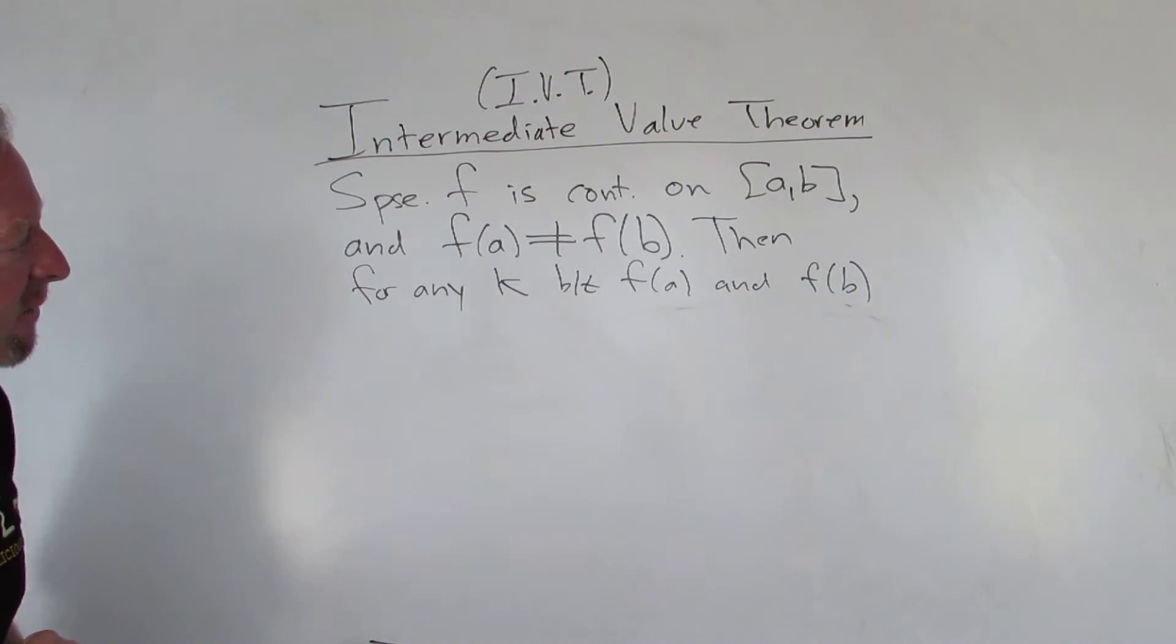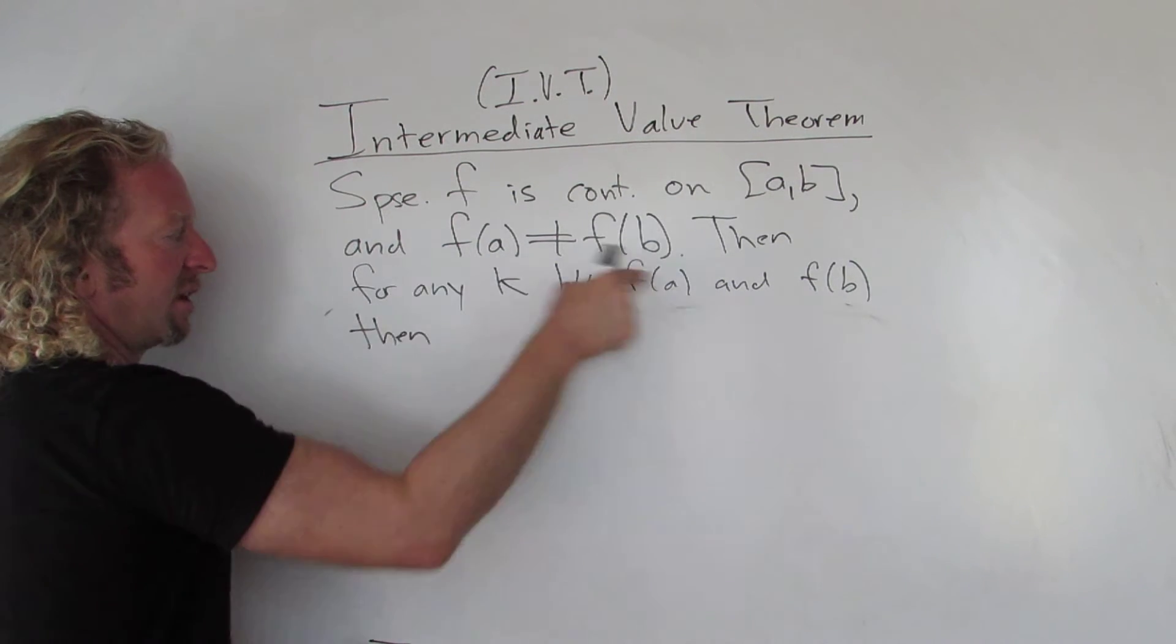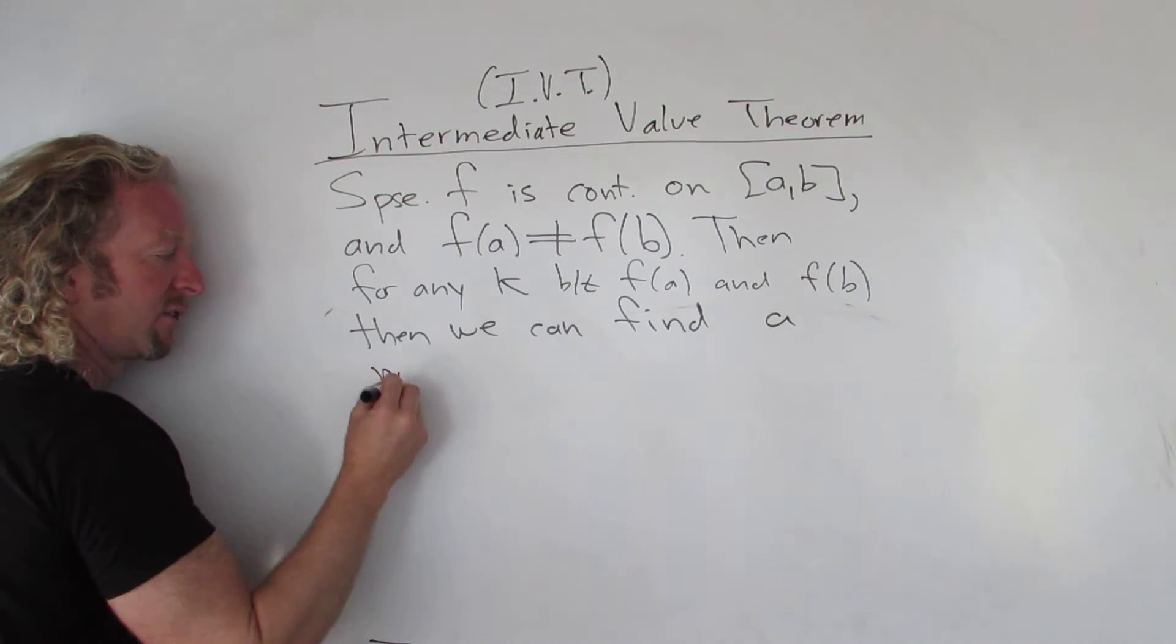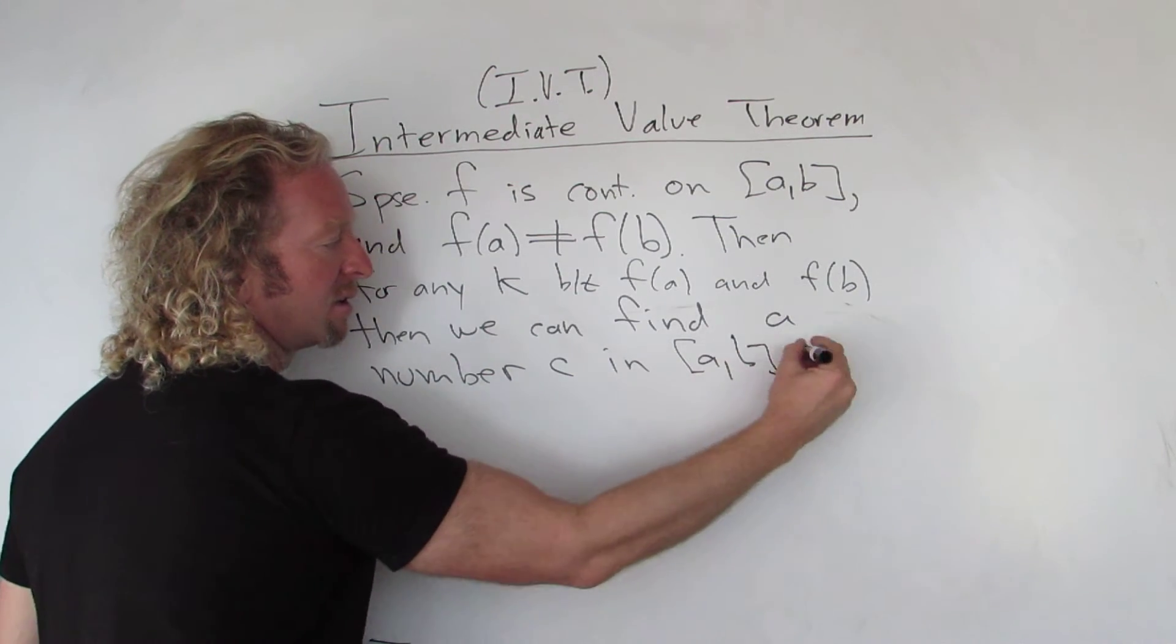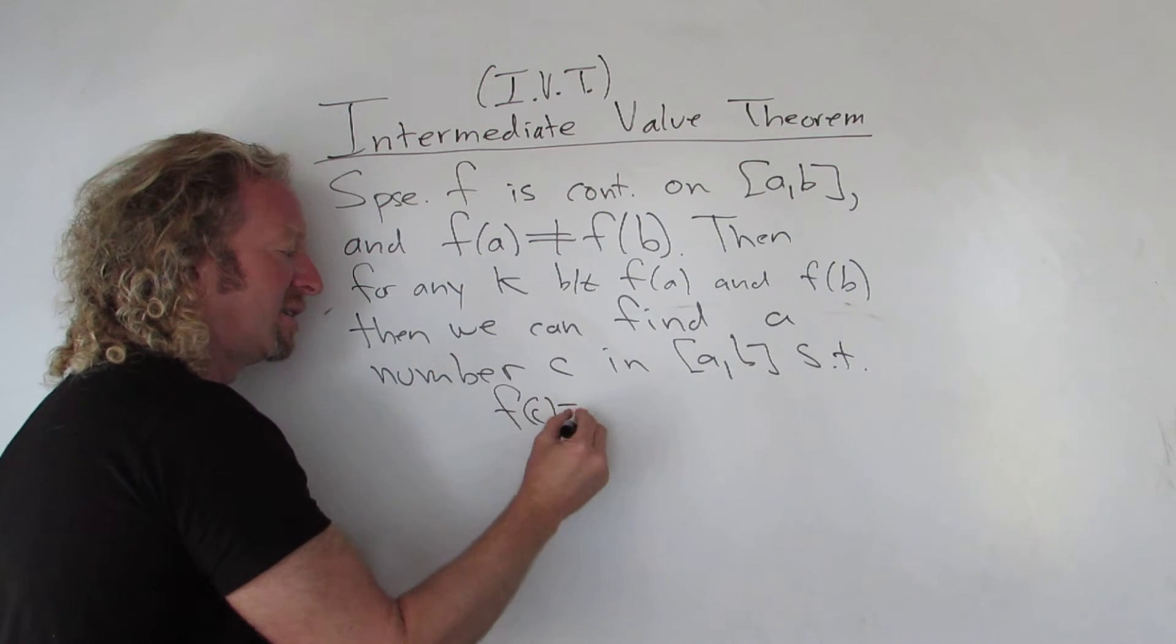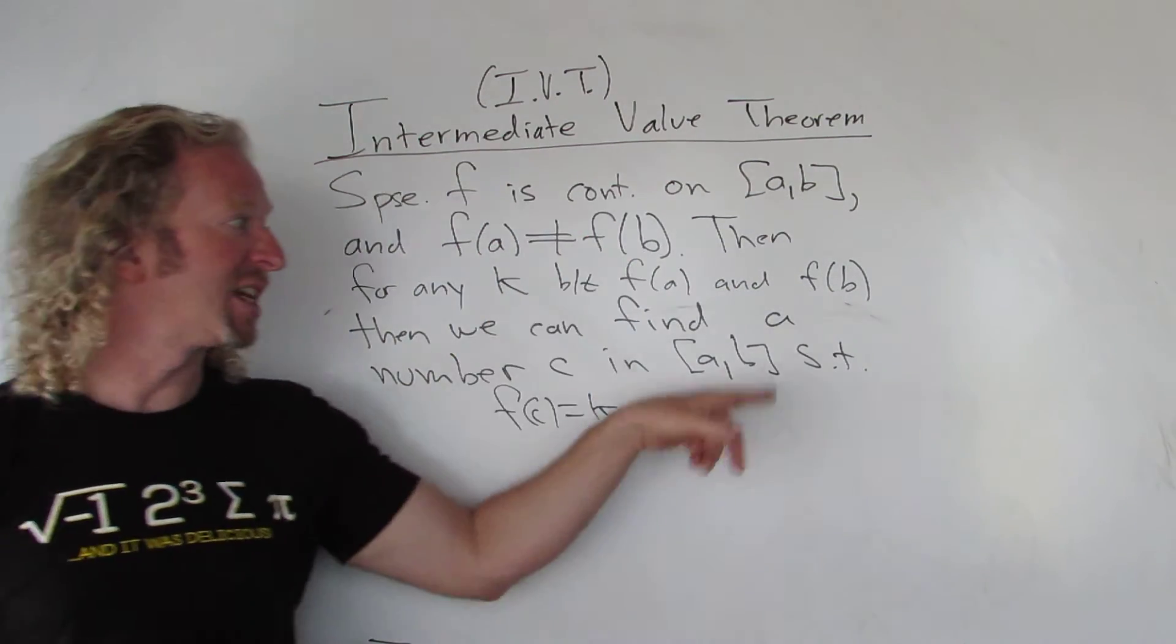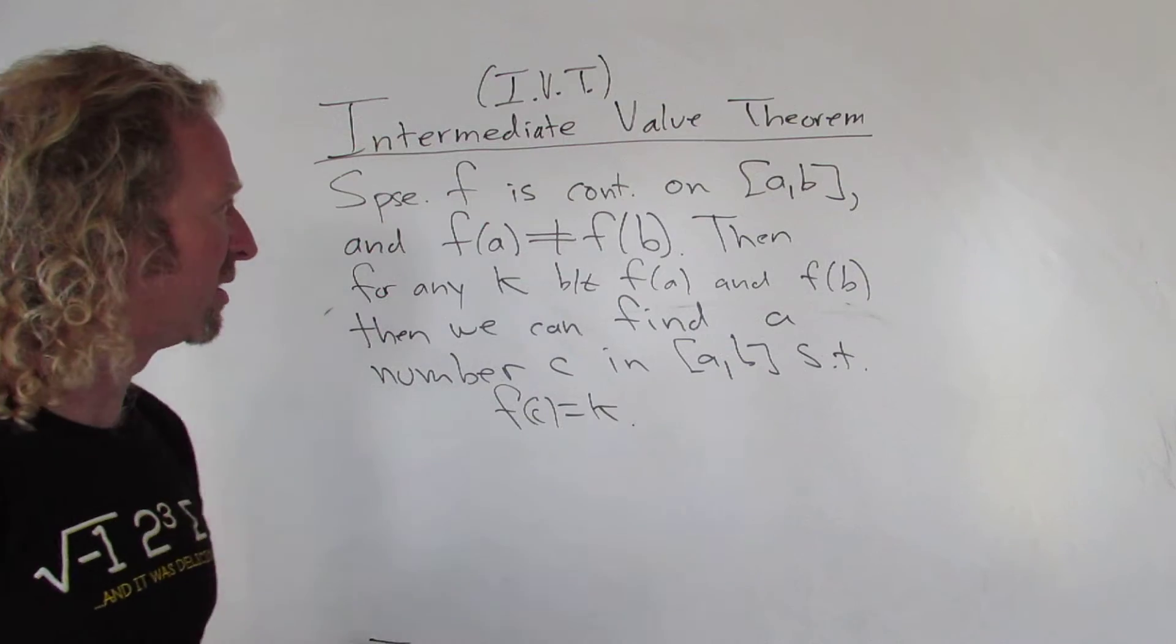So whenever you have a number between F(A) and F(B), for any K, we can find a number C in [A, B] such that F(C) equals K. So given a continuous function on a closed interval where the values of the endpoints are not the same, if you take any Y value between these two, you can find the number C in the interval such that F(C) equals K.